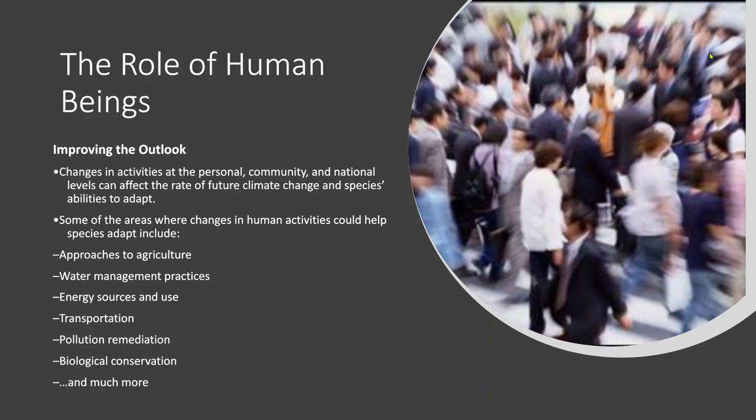Well-thought-out approaches and investment in conservation, sustainable agriculture practices, pollution reduction and water management can all help ecosystems withstand the impacts of a changing climate. Think about climate change in the context of your own life. What are some decisions you can make that might help reduce carbon dioxide emissions? Can you think of ways people in your community have reduced other human influences on the ecosystem that might make it easier for local species to adapt to climate change?